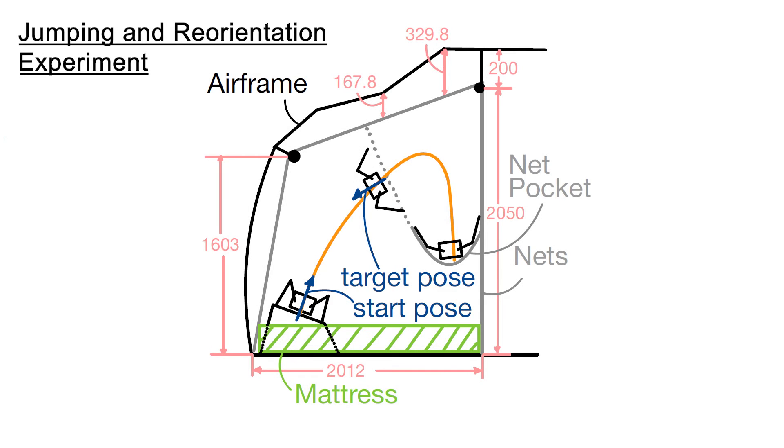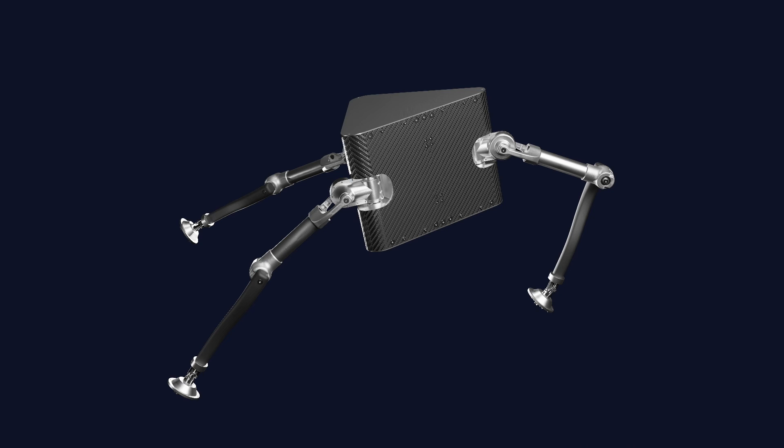In a second experiment, we want to combine the jumping and reorientation capabilities by having Spacehopper jump off an inclined plane, then reorient to a desired position and land in a pocket of the netting. Discussion and details of the experiment are given in the proposal.